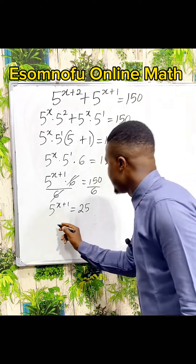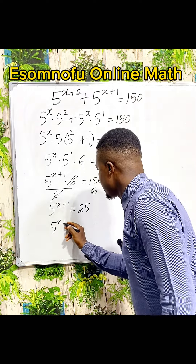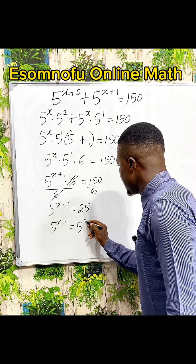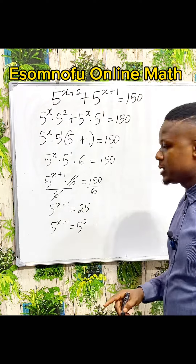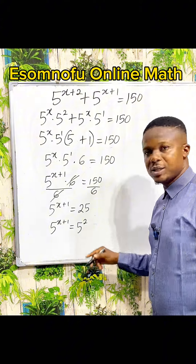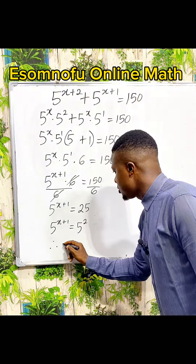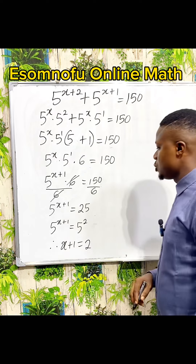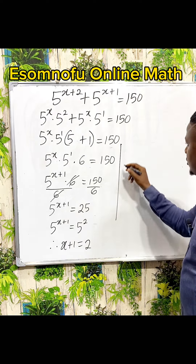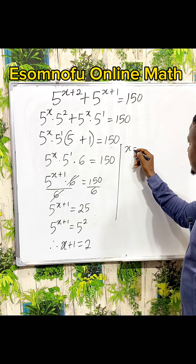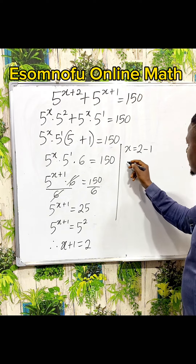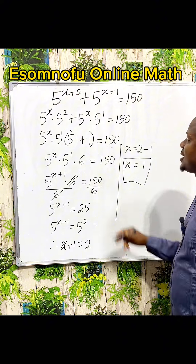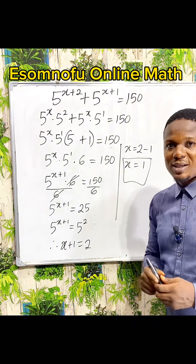So we have 5 to the power of x plus 1 is equal to 25, which is 5 to the power of 2. Since the bases are the same, automatically the powers should be the same. Therefore, x plus 1 is equal to 2. Solving this, x is equal to 2 take away 1, and 2 take away 1 is 1. So the value of x that satisfies this equation is equal to 1.